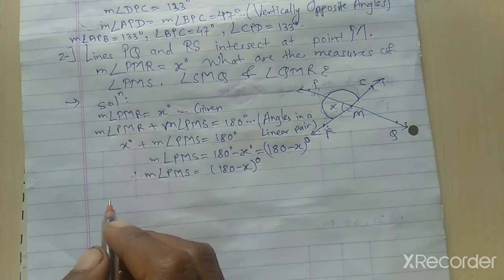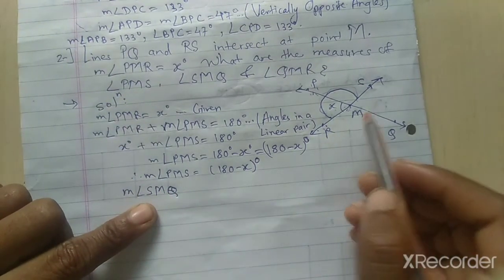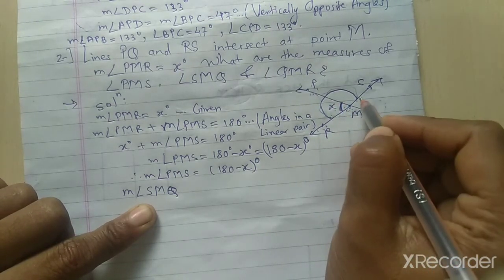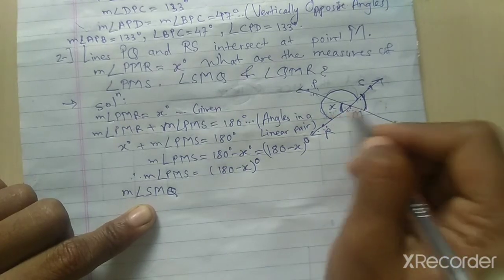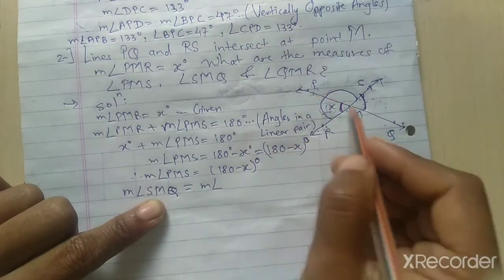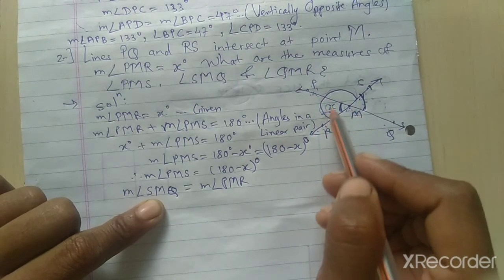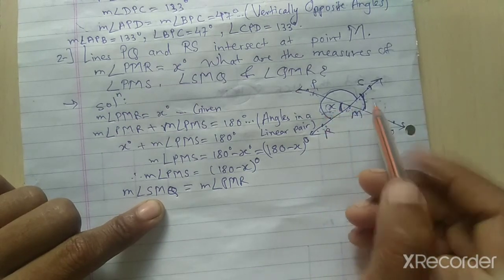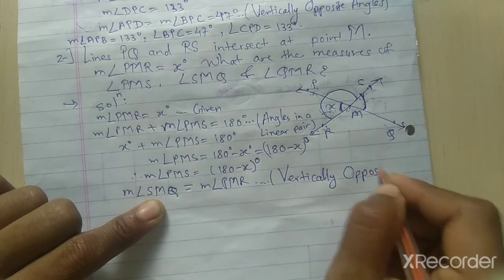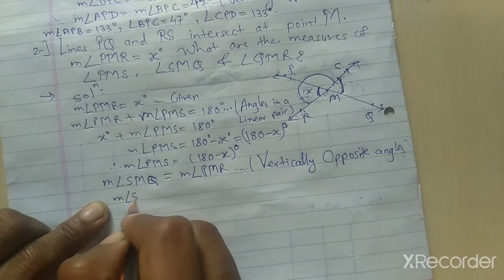Now for angle SMQ: SMQ is vertically opposite to PMR. Since PMR equals X degrees, measurement of angle SMQ equals X degrees. Reason: vertically opposite angles.